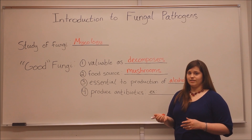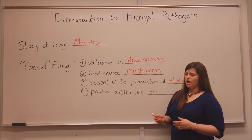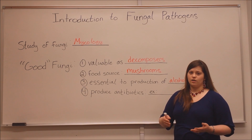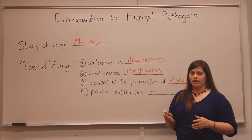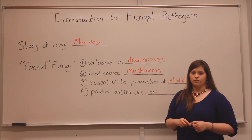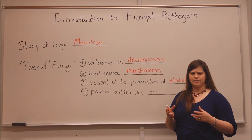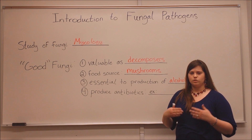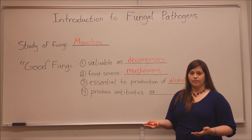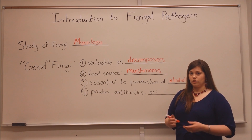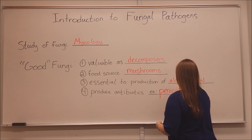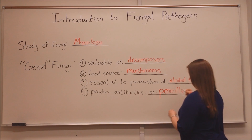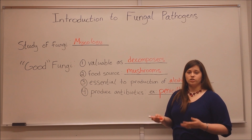Fungi are also an important source of antibiotics — they are able to produce antibiotics that are active against various bacterial pathogens. For example, the first antibiotic ever discovered was discovered by Alexander Fleming. He noticed in his lab that he had some mold growing, a Penicillium species, and it was able to produce something that could inhibit the growth of bacteria. Those Penicillium molds are where we get the antibiotic penicillin. These are the various ways in which many fungi are actually good for us.